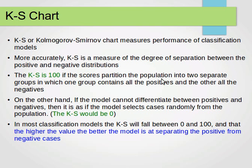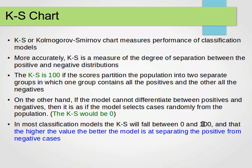The KS is 100 if the scores partition the population into two separate groups where one group contains all the positives and the other contains all the negatives — i.e., there is no overlap. On the other hand, if the model cannot differentiate between positives and negatives, it would be selecting randomly from the population, so the KS value will be 0. In most classification models, the KS will usually be between 0 and 100, and the higher the value, the greater the model is at separating positive from negative cases. We want the KS value to be as close to 100 as possible.